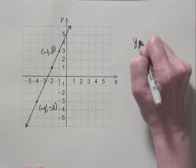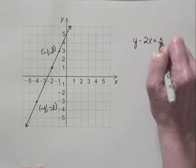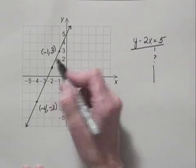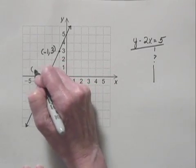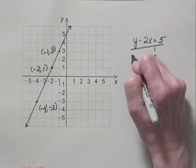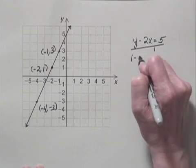We have y minus 2x equals 5. So I'll substitute, this is the point I'm checking, (-2, 1). I'll substitute 1 for y and negative 2 for x.